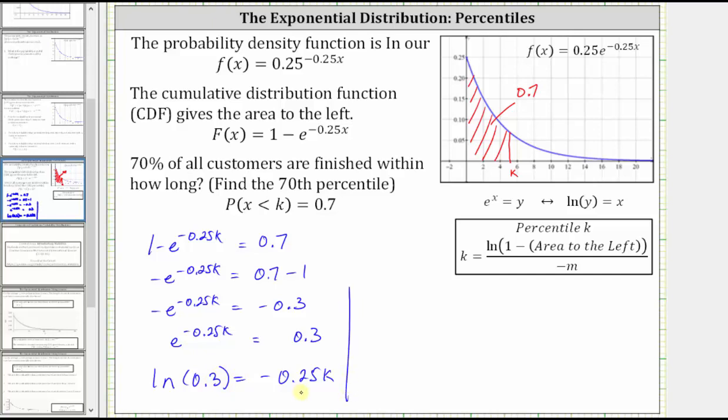Notice now to solve for k, we divide both sides by negative 0.25.